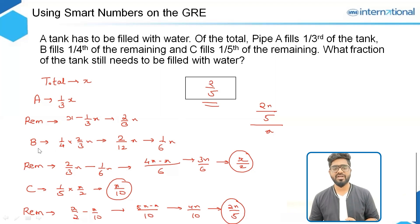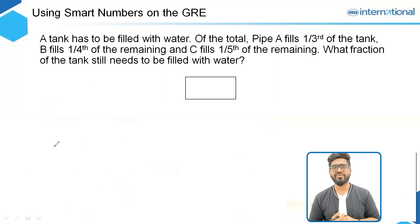But what is the most convenient number to be chosen while dealing with fractions? In this question there are 3 fractions mentioned: 1/3, 1/4, and 1/5. You can make this a habit—while dealing with fractions, you can take the total as the product of the denominators. Let's see what happens if we take the total as the product of 3, 4, and 5. So 3 times 4 times 5 is 60.